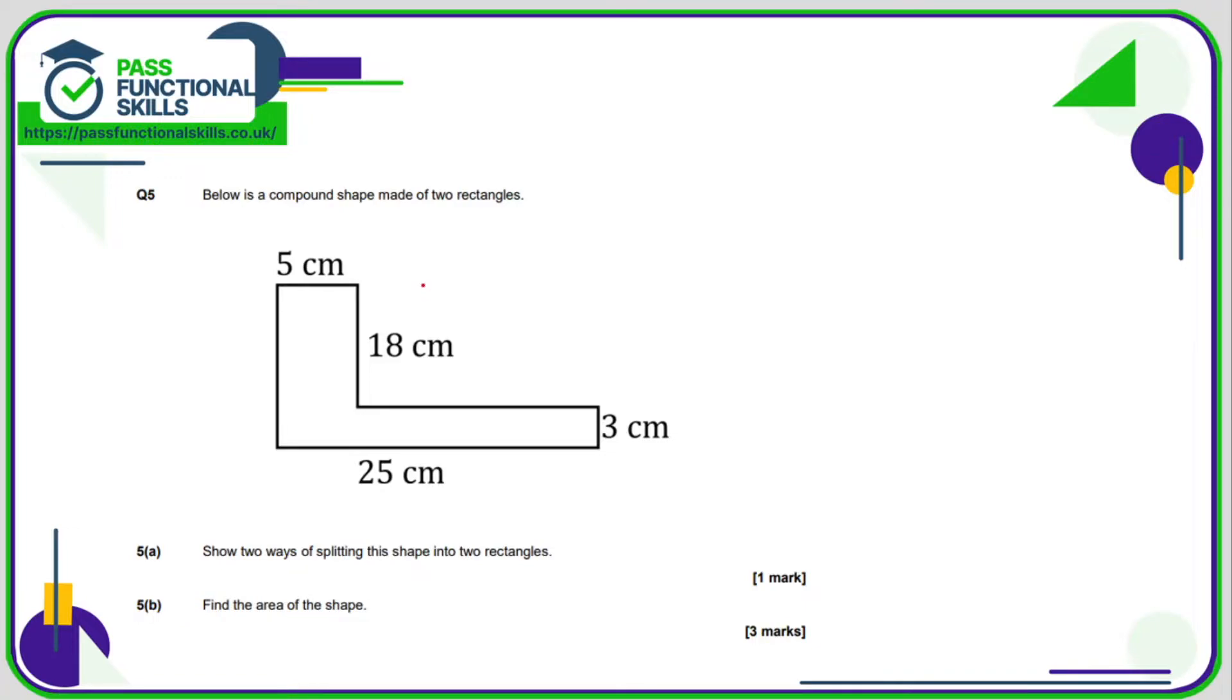Question 5 is a calculator question as well. So we want to split this rectangle in this shape into two rectangles. So I would probably, well, there's two ways you can split it. You can either split it horizontally or vertically as well. And the whole reason you're splitting it is so that you can work out the area of rectangle A and rectangle B. So rectangle A is simply 5 times 18,